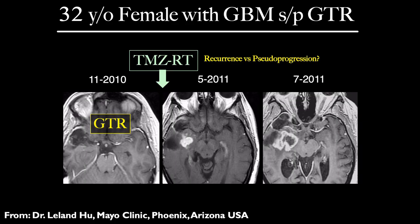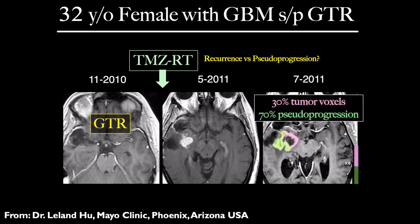The example of using FTB is shown for a 32-year-old female with a glioblastoma multiforme. After gross total resection and chemotherapy plus radiation therapy, there was a new enhancing lesion — the question being, is it recurrence or pseudoprogression? A couple of months later it looked even worse. Creating our FTB maps, we can see that 30% of that enhancing lesion is tumor, but 70% is pseudoprogression. Having this knowledge of how much of the enhancement is actual tumor can be very relevant in terms of treatment decisions.